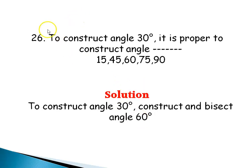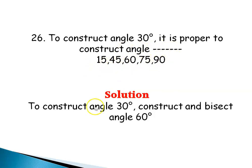Question 26: To construct angle 30 degrees, it is proper to first construct which angle — 45, 60, 75, or 90? To construct a 30-degree angle, I would have to construct and then bisect angle 60 degrees. So angle 60 degrees is the answer.